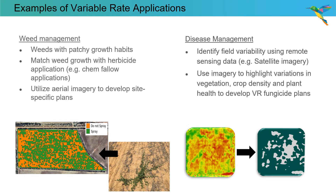Some examples of variable rate applications can be seen in weed management. Weeds with patchy growth habits allow us to match the weed growth with a herbicide application. We can see this in Kochia/brome applications for example, and we can utilize aerial imagery to develop those site-specific plans.